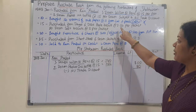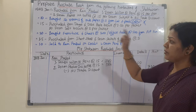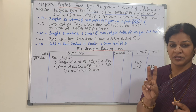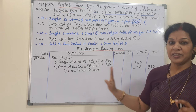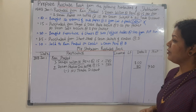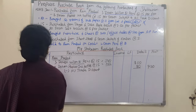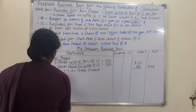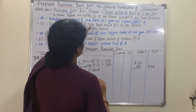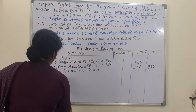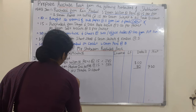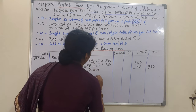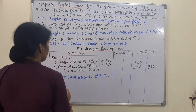On the 15th: purchased from Dayal — 6 dozen Parley biscuits at the rate of 2 rupees 50 paisa per packet, and 20 dozen salt biscuits at the rate of 5 rupees per packet. Since goods are purchased and cash is not mentioned, we include this in the purchase book. So January 15th — we write Dayal and then the details: 6 dozen Parley biscuits at the rate of 2 rupees 50 paisa.